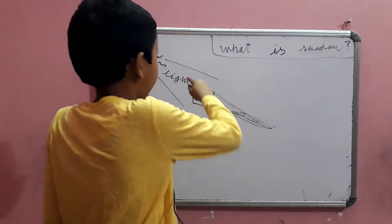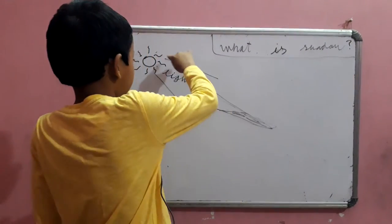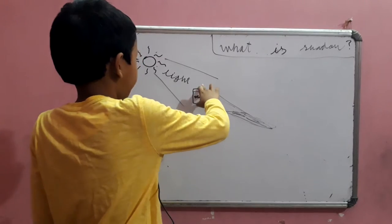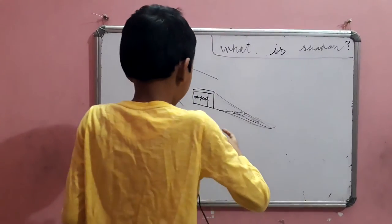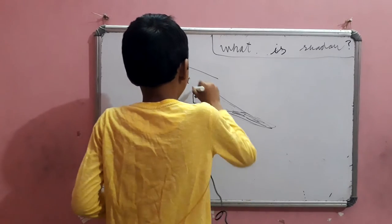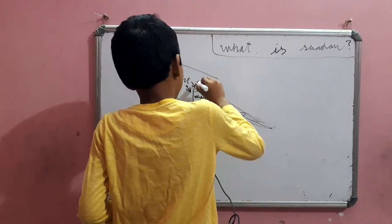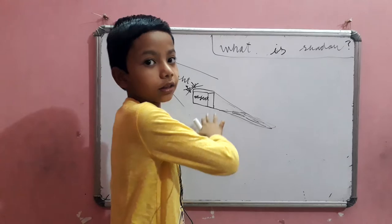So, this is the light. It is passing through the sky. But now, this is an object, and now the light's path gets blocked.